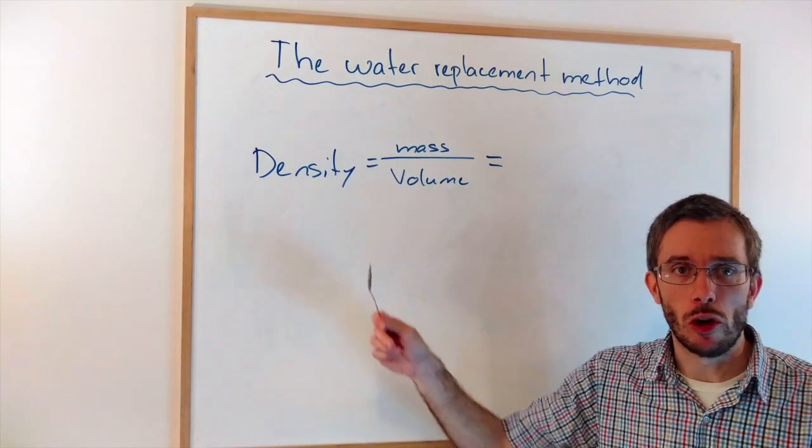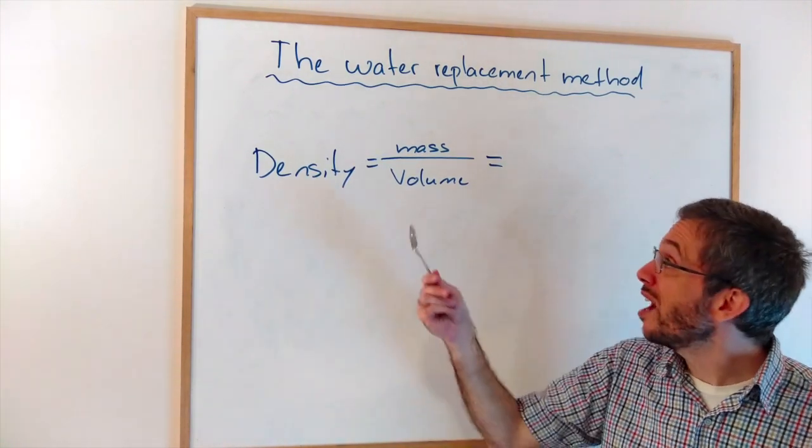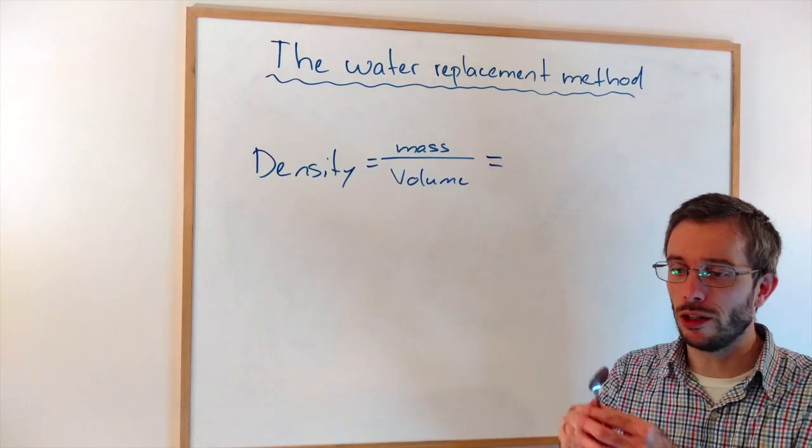Why would I need to know the volume? I need to know the volume if I want to calculate the density of an object. The mass of the object can easily be obtained by putting it on a scale, but the volume, if it's oddly shaped, cannot.